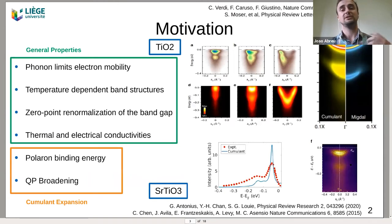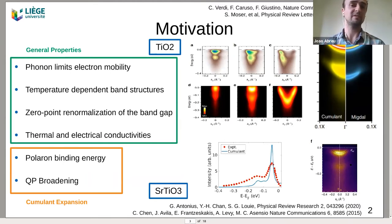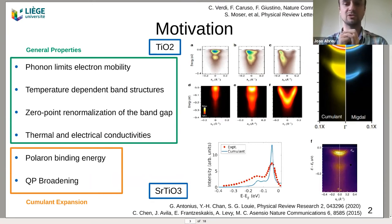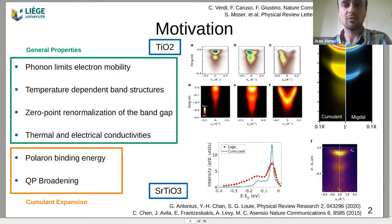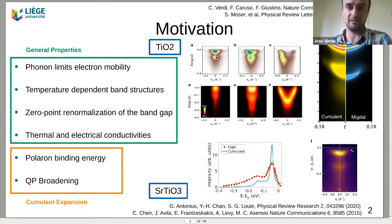The motivation is that phonons affect several electronic properties like the mobilities, the band structure at different temperatures, conductivities, and ARPES signatures. For example, in the picture in the middle on the top, you have the ARPES picture, where in blue you have the quasi-particle peak, and then other signatures below, which are polarons.